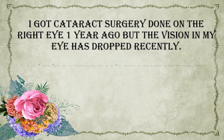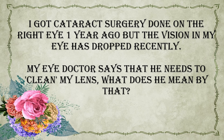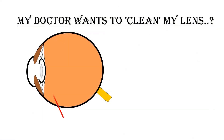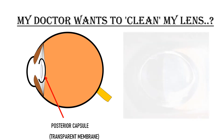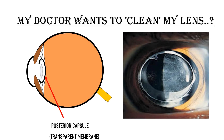If vision drops after cataract surgery and the doctor says he needs to clean the lens, what does that mean? During cataract surgery, the artificial lens is placed on a thin membrane called the posterior capsule. This posterior capsule is transparent, but with time it can turn opaque and cause decreased vision. When your doctor says he needs to clean or polish the lens, he means removing this membrane. It does not require surgery — this membrane can be easily removed in the OPD with the help of laser.